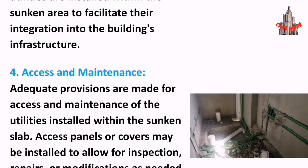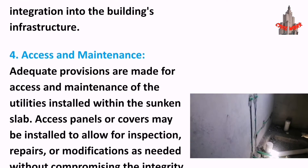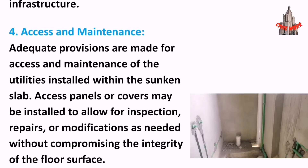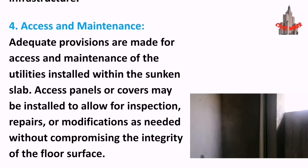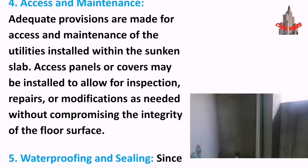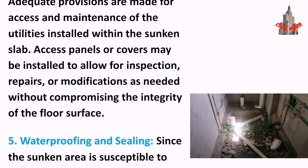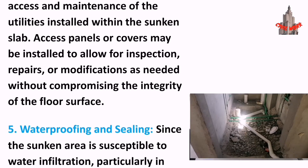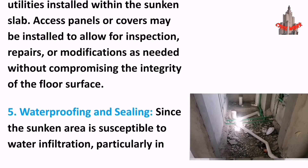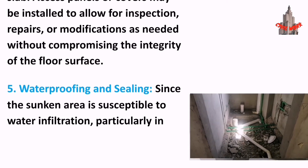Four: Access and maintenance. Adequate provisions are made for access and maintenance of the utilities installed within the sunken slab. Access panels or covers may be installed to allow for inspection, repairs, or modifications as needed without compromising the integrity of the floor surface.